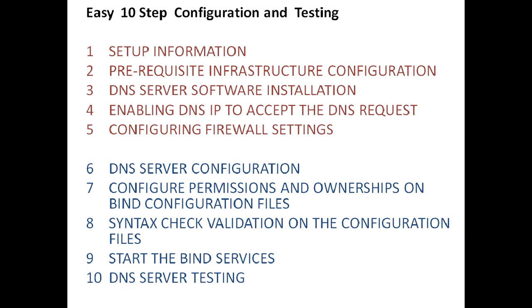Once Part 1 is finished we will jump to Part 2. In Part 2 we cover DNS server configuration, then configuring permissions and ownership on the bind configuration files, then performing syntactic validation on the bind configuration files, then starting the bind service — meaning we are starting our DNS server. As the last step we will perform DNS server testing, which means we will verify our DNS server is doing IP-to-name resolution and name-to-IP resolution vice versa.